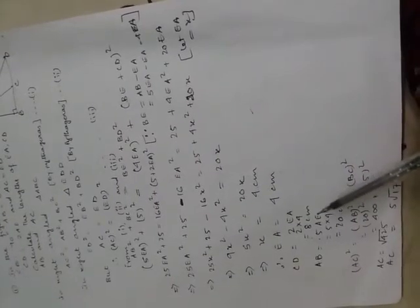Now, what is the value of CD? 2EA, 2 into 4, 8 centimeters. AB is 5EA, that is 5 into 4, 20.